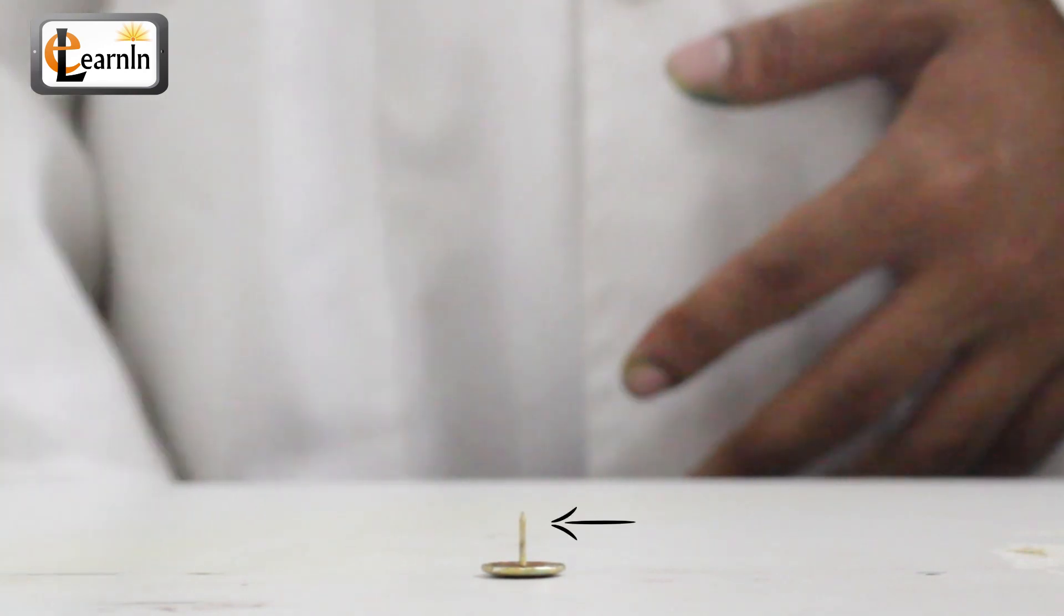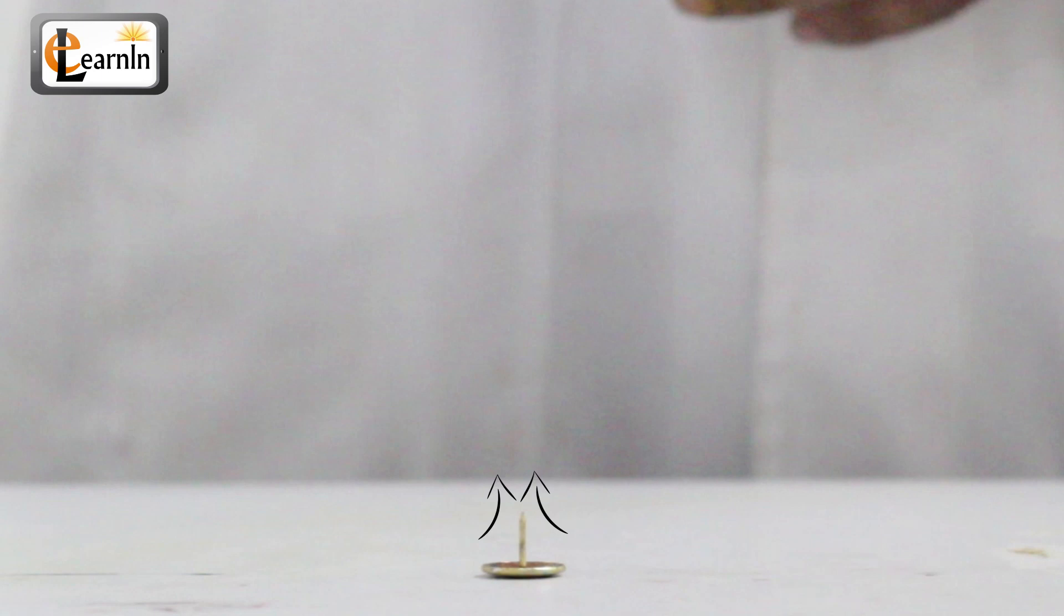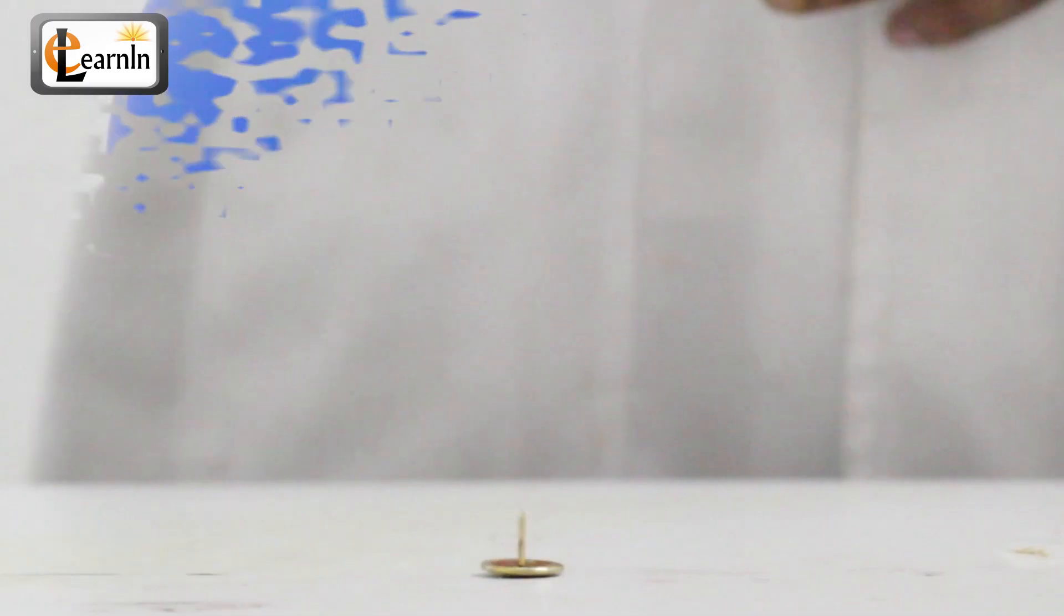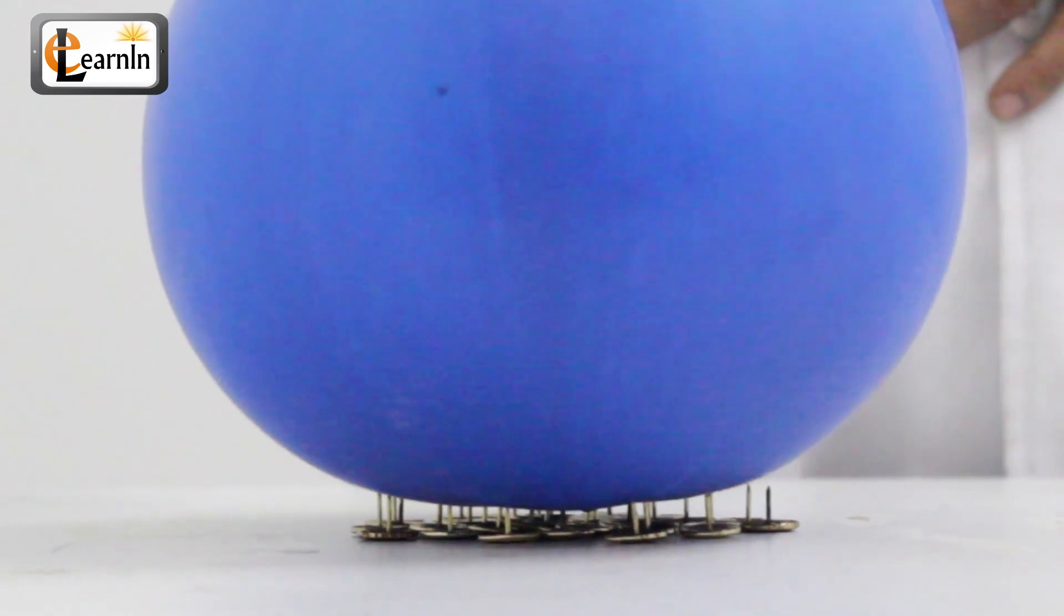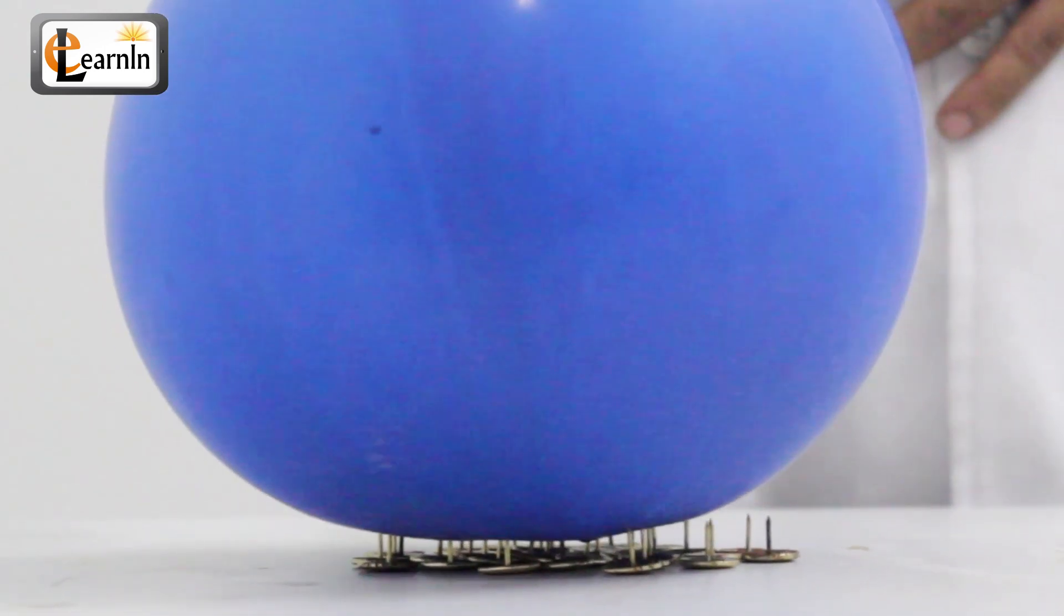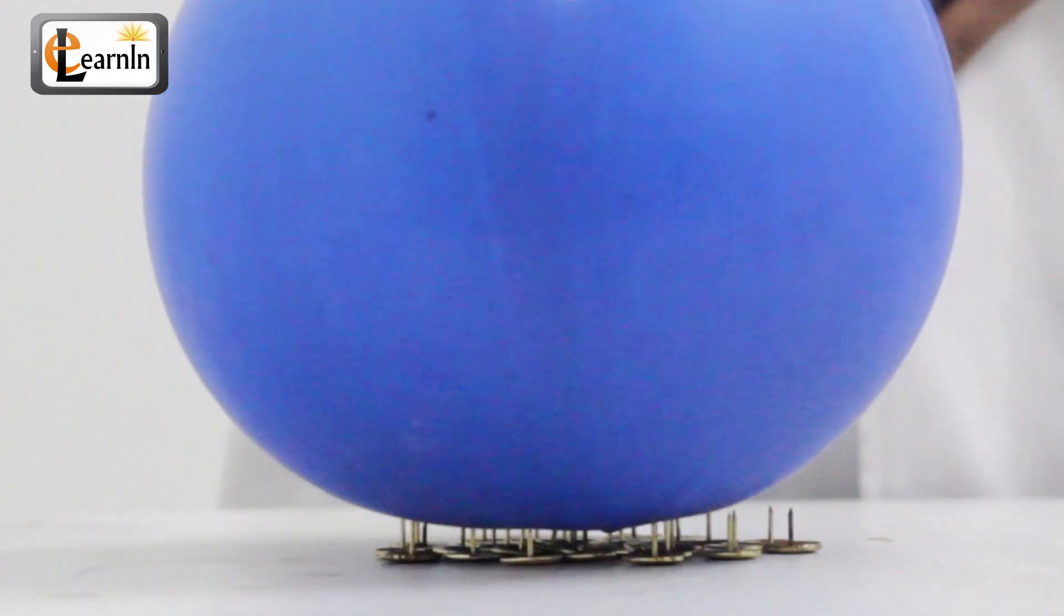When there is only one pin poking the balloon, the entire pressure is exerted at a single point. But when there are lots of pins poking the balloon, the pressure with which we push the balloon is distributed between them. So the force is spread among the nails, which results in reduced pressure.